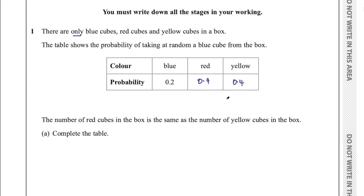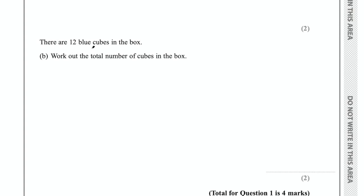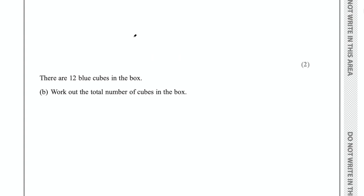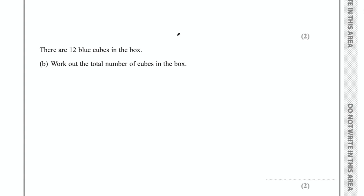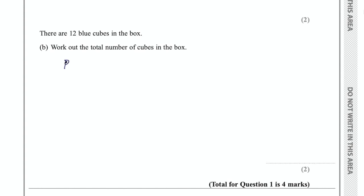We're done with that for two marks. Part B says there are 12 blue cubes in the box — work out the total number of cubes. For this you need to know how this probability in the table is calculated. To work out that probability you do the number of blue cubes divided by the total number of cubes. So the probability of picking blue is 12 divided by the total, and that probability is given as 0.2.